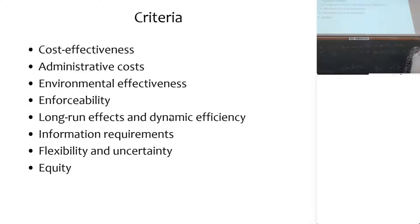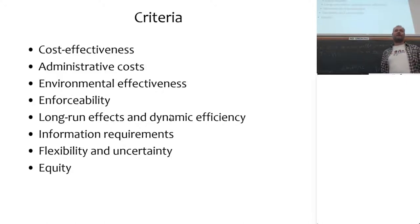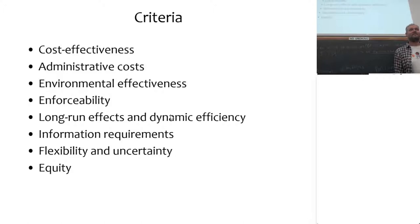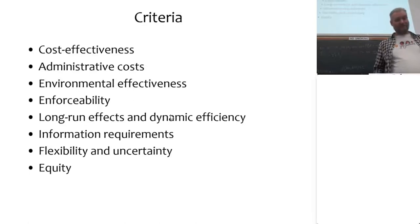Next week I'll talk about long-run effects and dynamic efficiency — some instruments work the same in the short run but have opposite effects in the long run. Some regulations work only if you know everything going on in the economy, whereas other types require the regulator to know very little. Some instruments are flexible and can be adjusted if new information arises, and others cannot. We also always need to look at the incidence of who is paying — is it the rich, the poor, companies, or households?